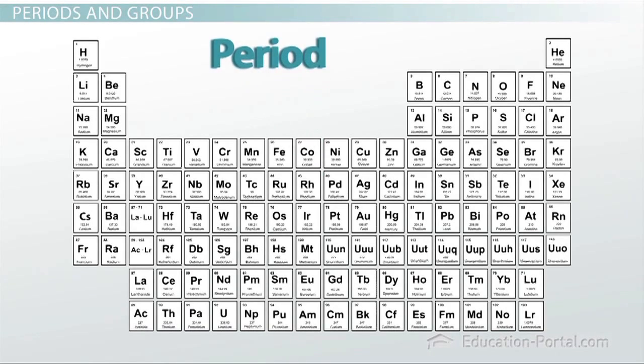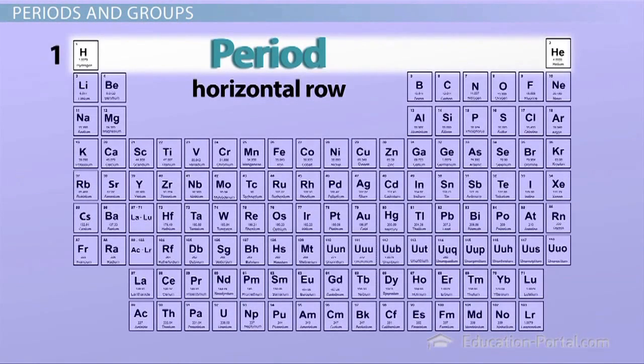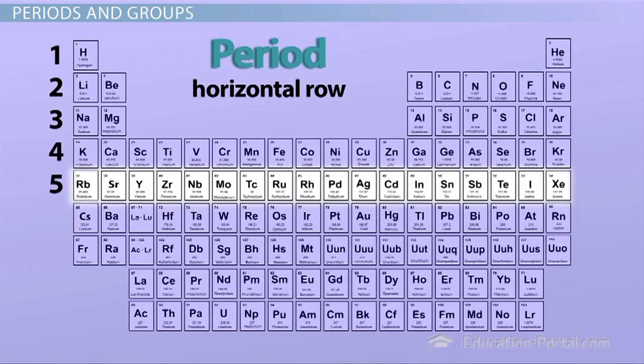A period on the periodic table is really just a horizontal row. The current periodic table has seven periods, with an island of two periods down below.